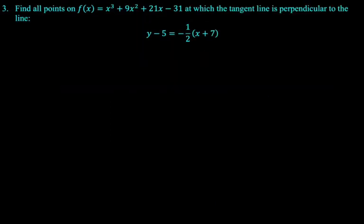Next up: find all points on f(x) = x³ + 9x² + 21x - 31 at which the tangent line is perpendicular to the line y - 5 = -½(x + 7). I think I might have a typo on this one too. The answers are gross and that's what makes me think that there's a typo.